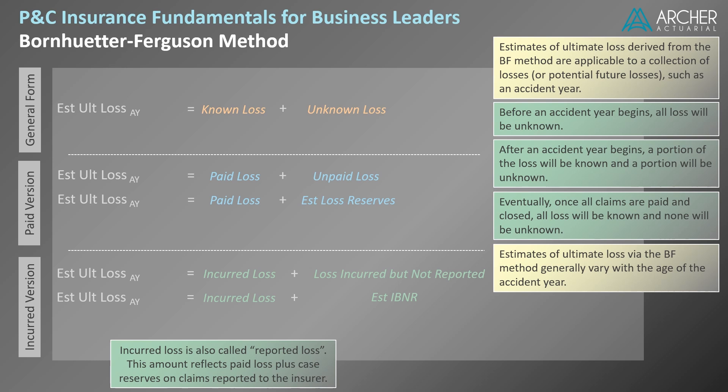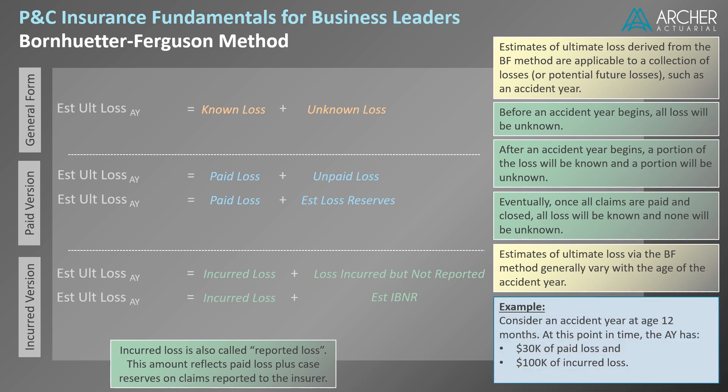To make this more tangible, let's look at a quick example. We have an accident year at age 12 months. At this point in time, the accident year has $30,000 of paid loss and $100,000 of incurred loss. In the paid version of the BF method, the estimate of ultimate loss for this accident year at 12 months would be equal to the $30,000 in paid loss plus the estimate of loss reserves at age 12. We're going to talk more about that second term shortly, but for now I just want you to see the general format of the paid version.